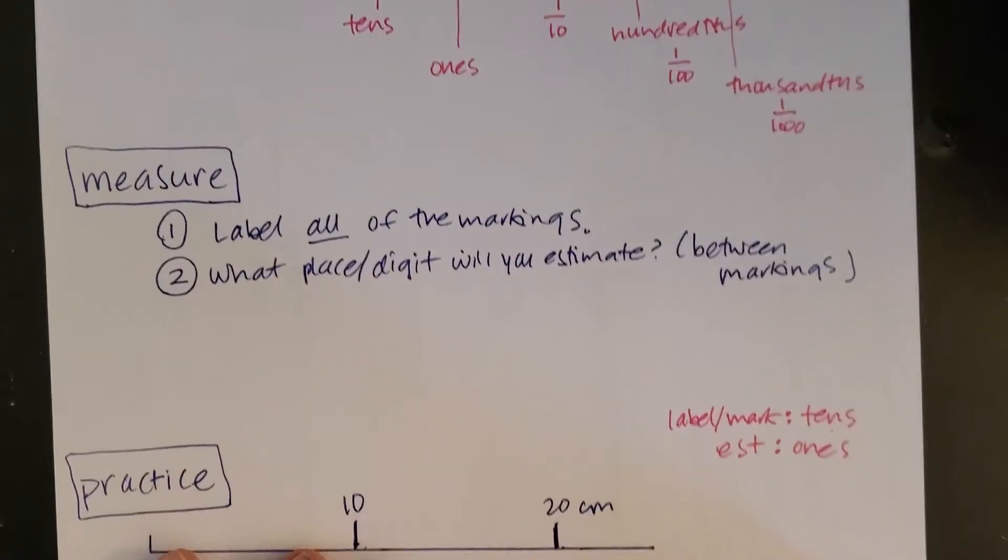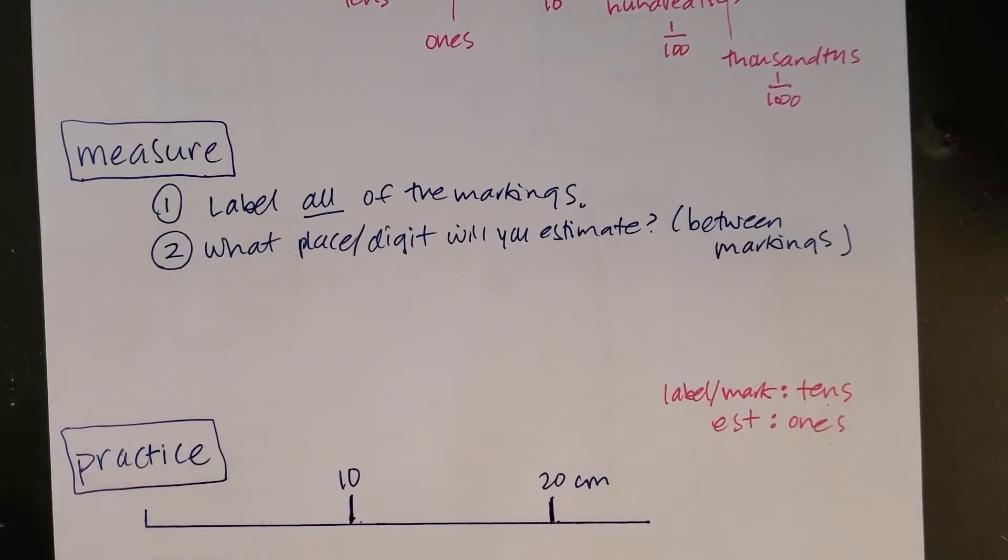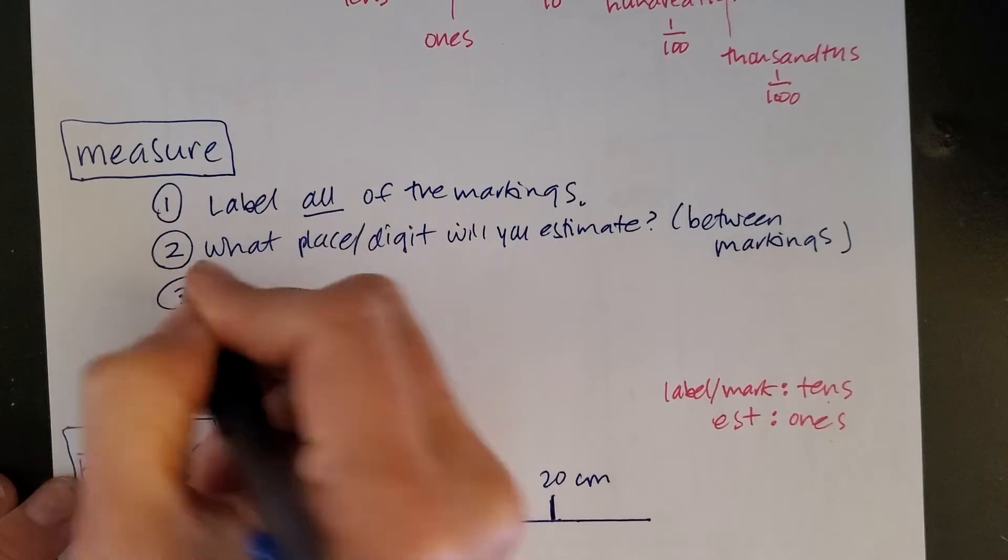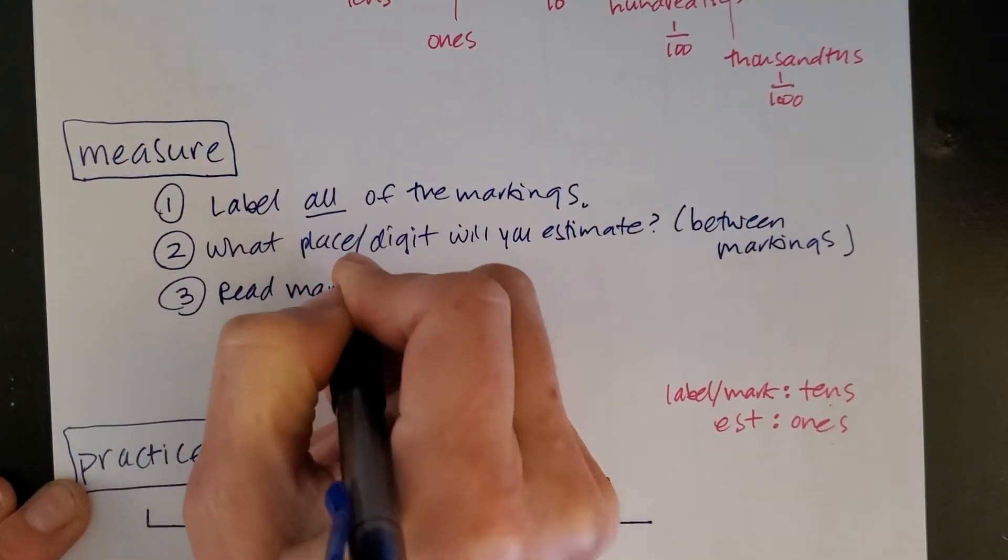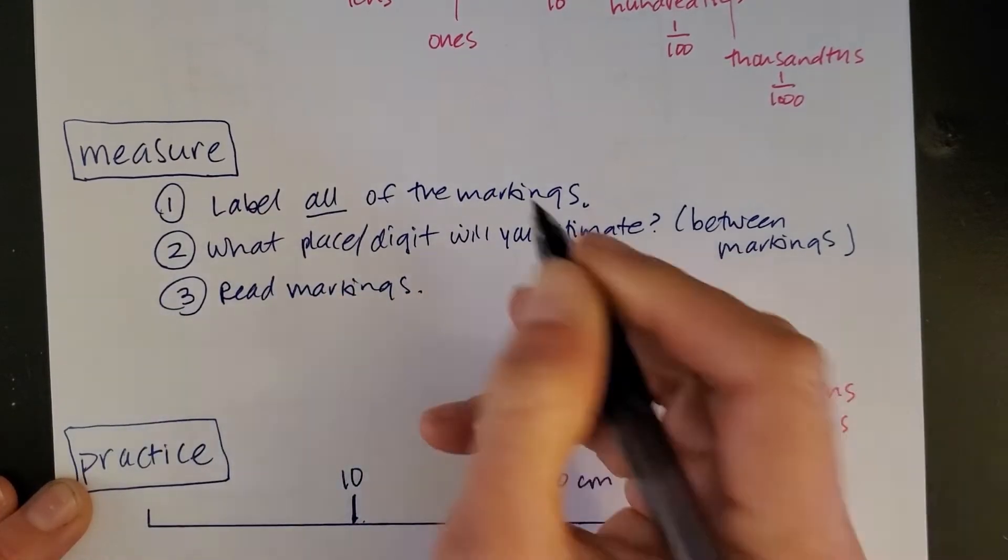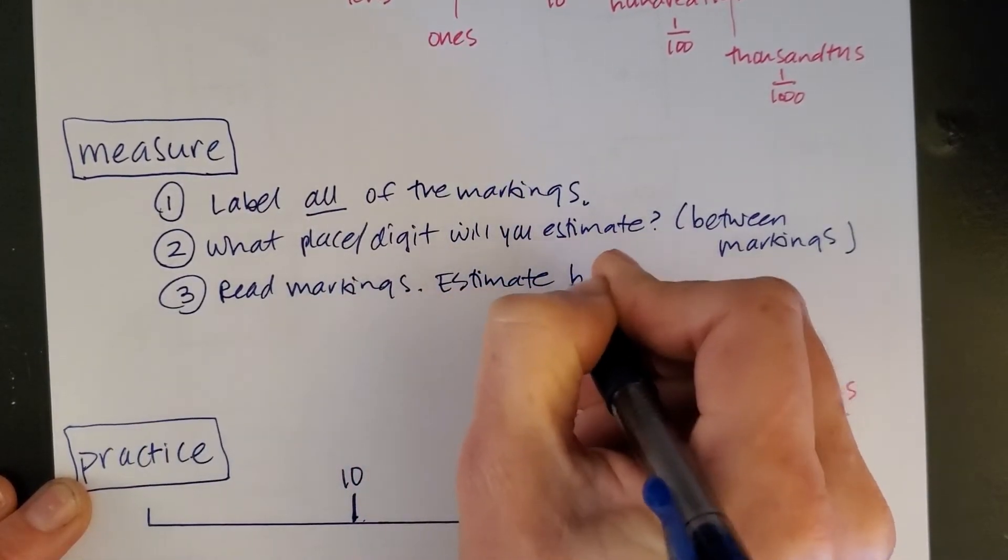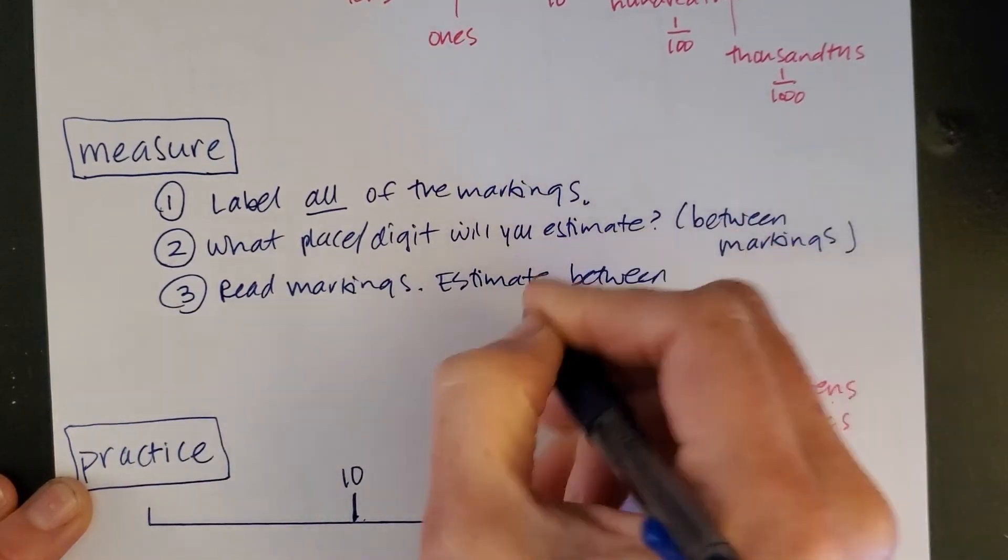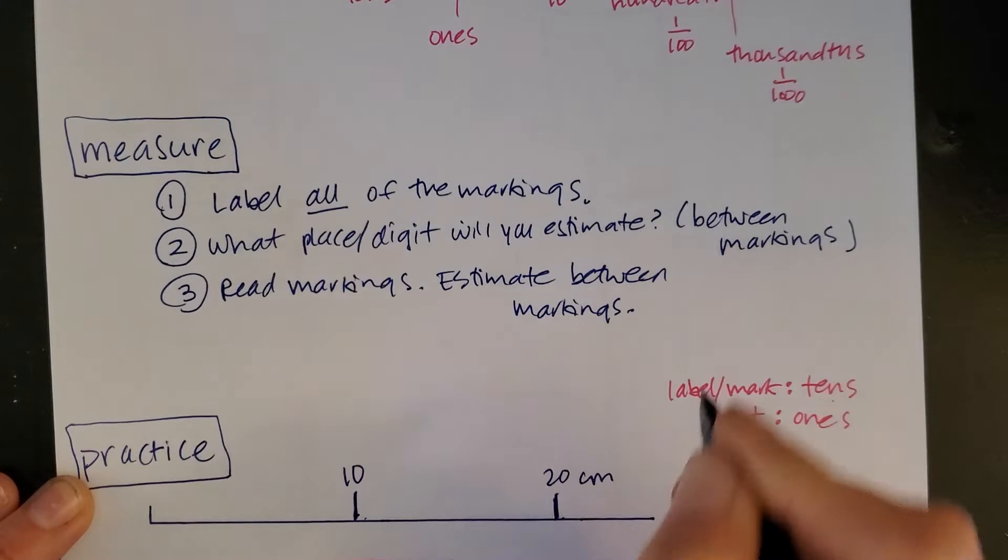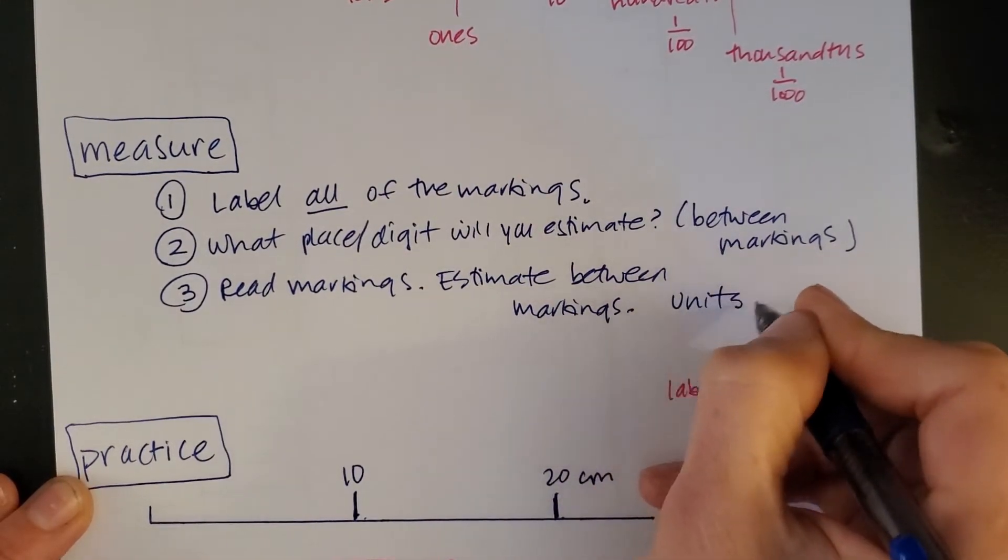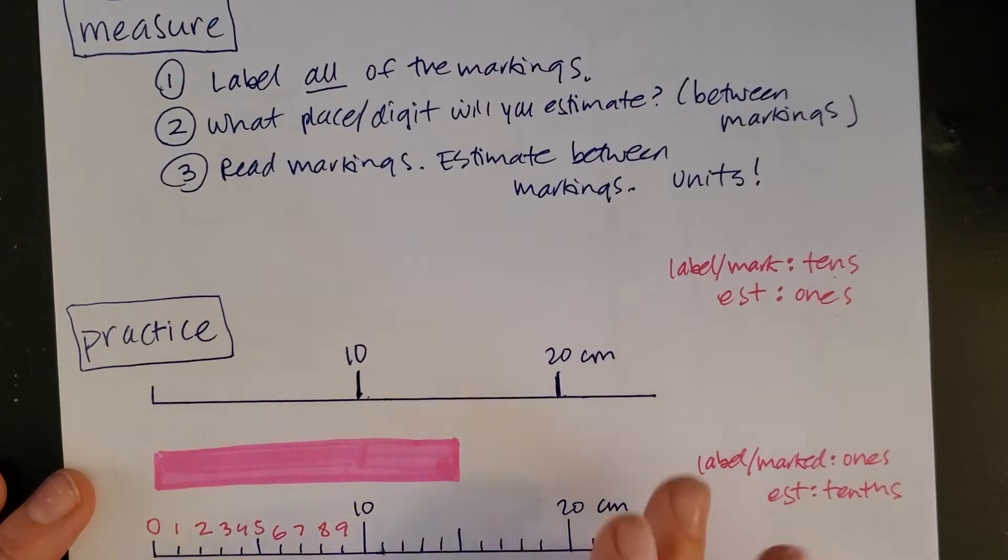So as we're getting ready to measure, label all of your markings. What place or digit will you estimate? Now you're ready to read your markings. So read your markings, and then estimate between the markings, and don't forget at the end of all of that to put your units on. Your tools will generally have the units marked on them somewhere.